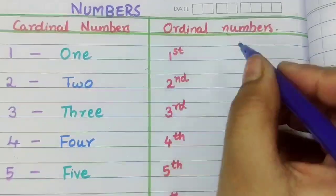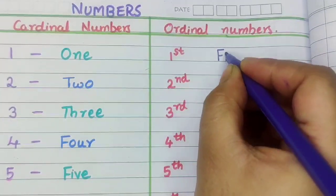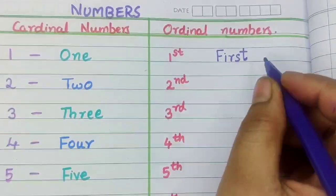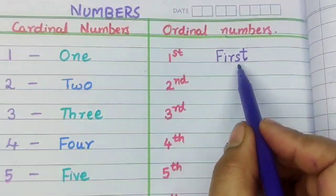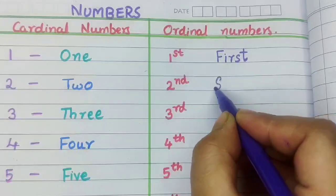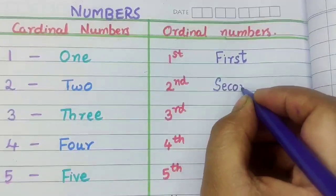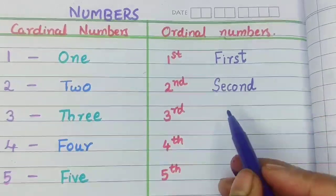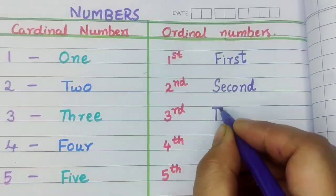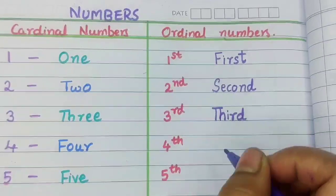First is written as F, I, R, S, T — first. Second is written as S, E, C, O, N, D — second. Third is written as T, H, I, R, D — third.